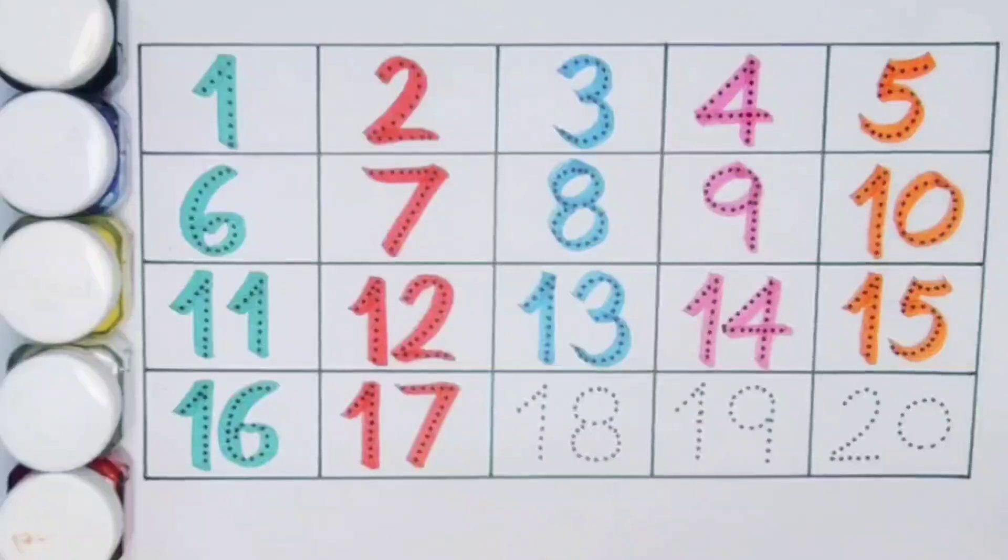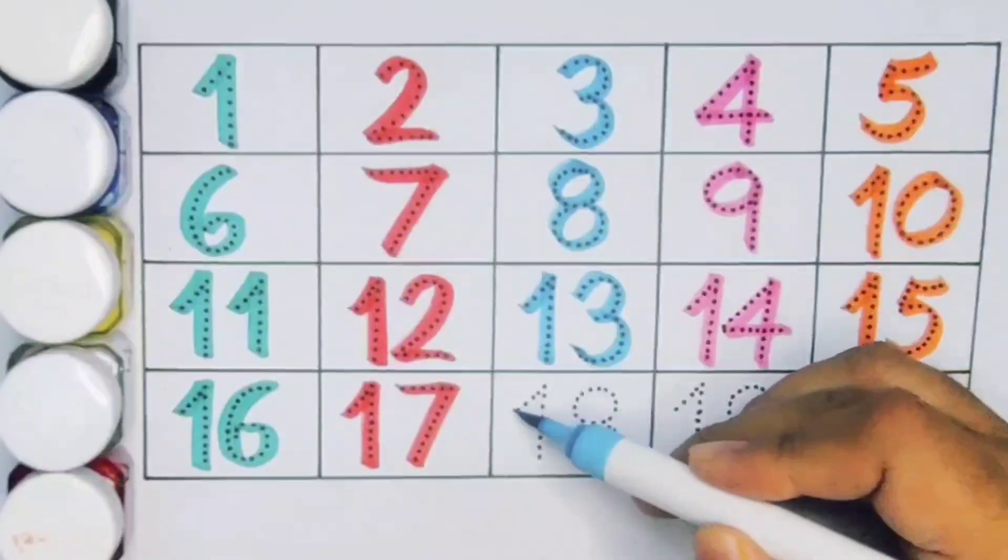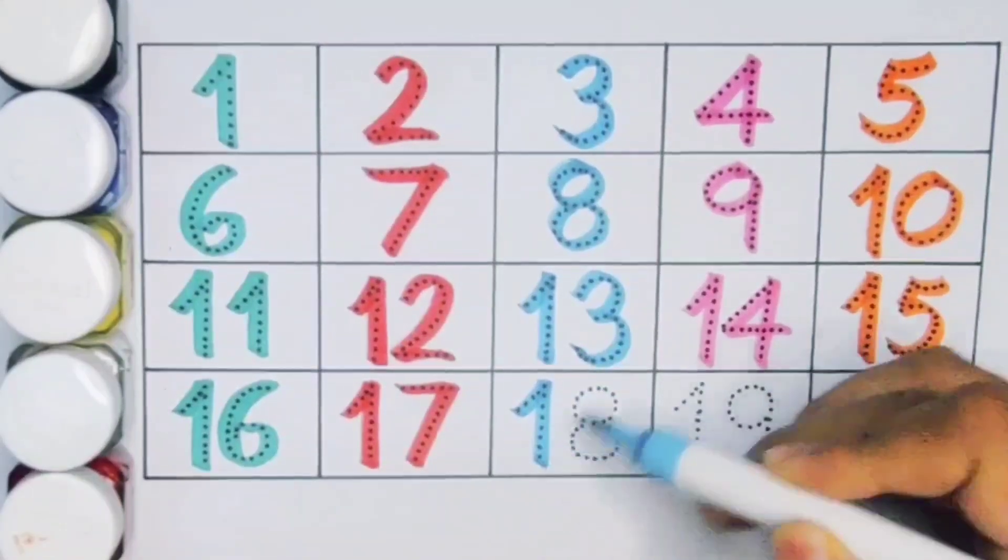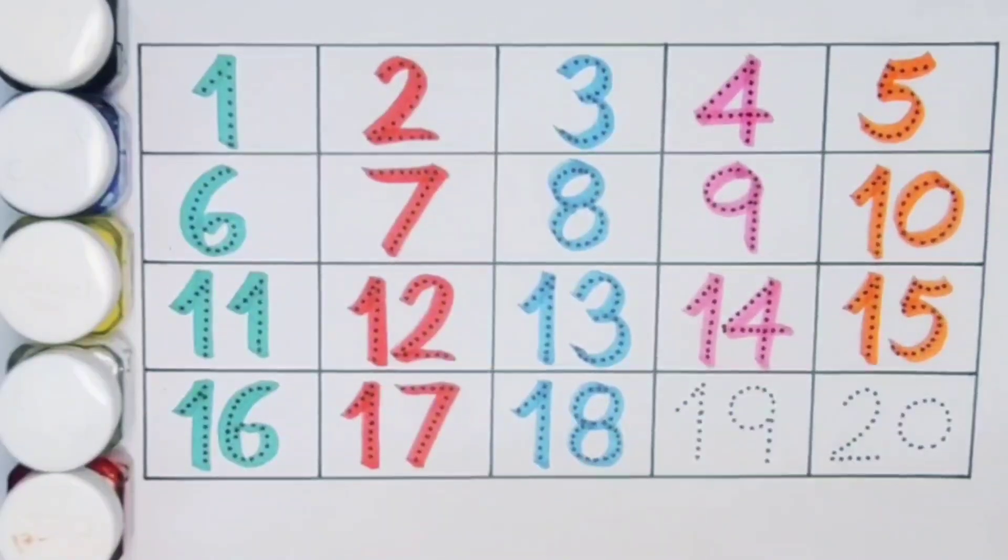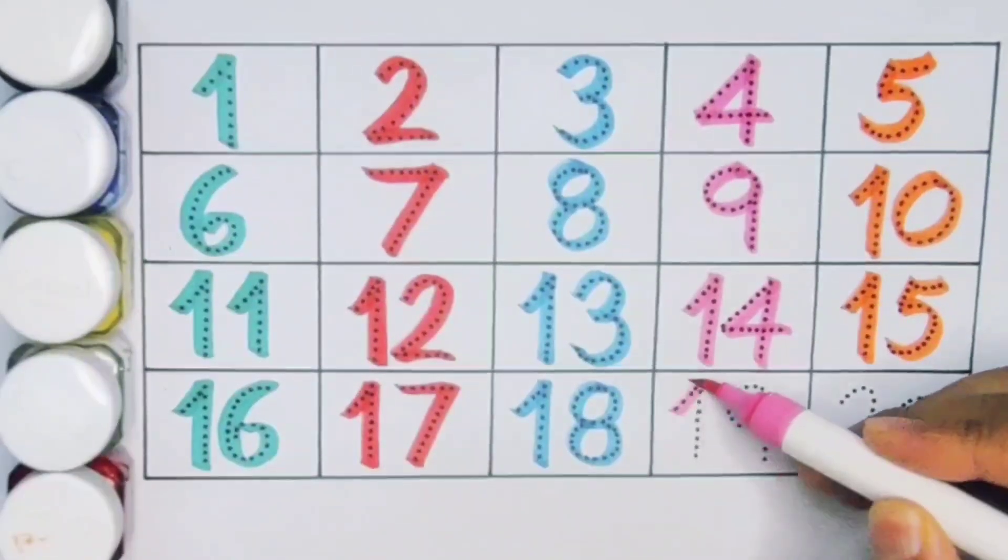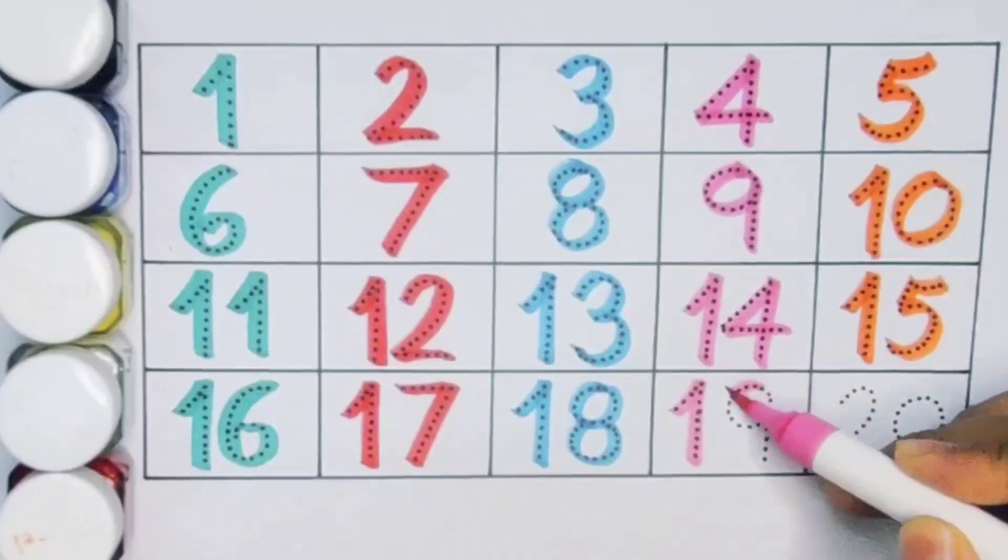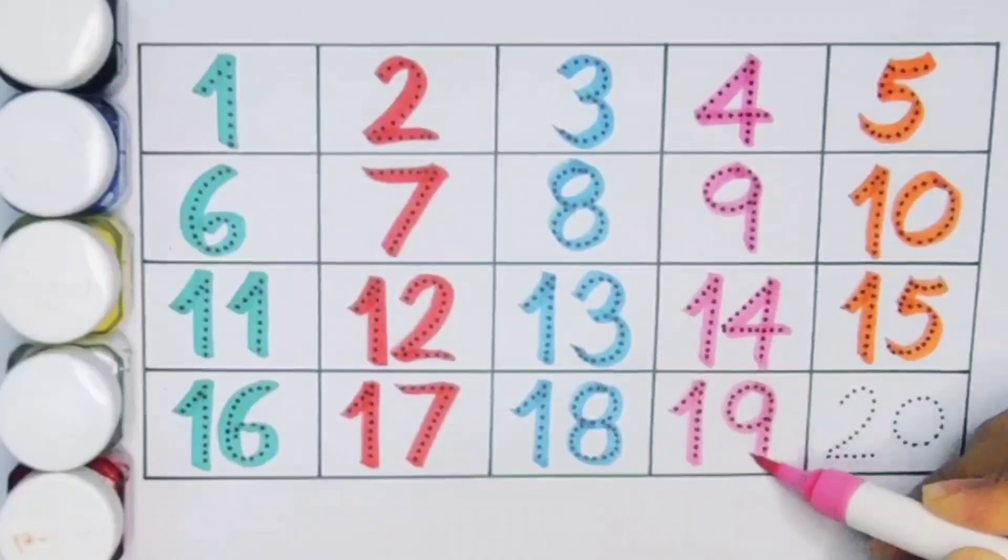Number 17. Next kids 18, 1, 8, 18. Number 18. Next kids 19, 1, 9, 19. Number 19.